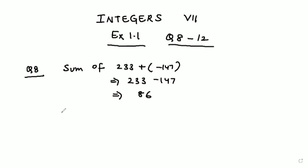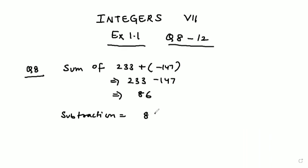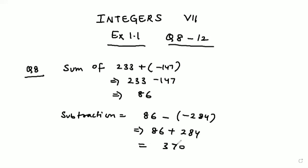Now we have to subtract -284 from this sum. So we write 86 minus (-284). The double negative becomes plus, so 86 plus 284 gives our answer as 370. Hope the question is clear — if any type of doubt is there, feel free to comment in the comment box.